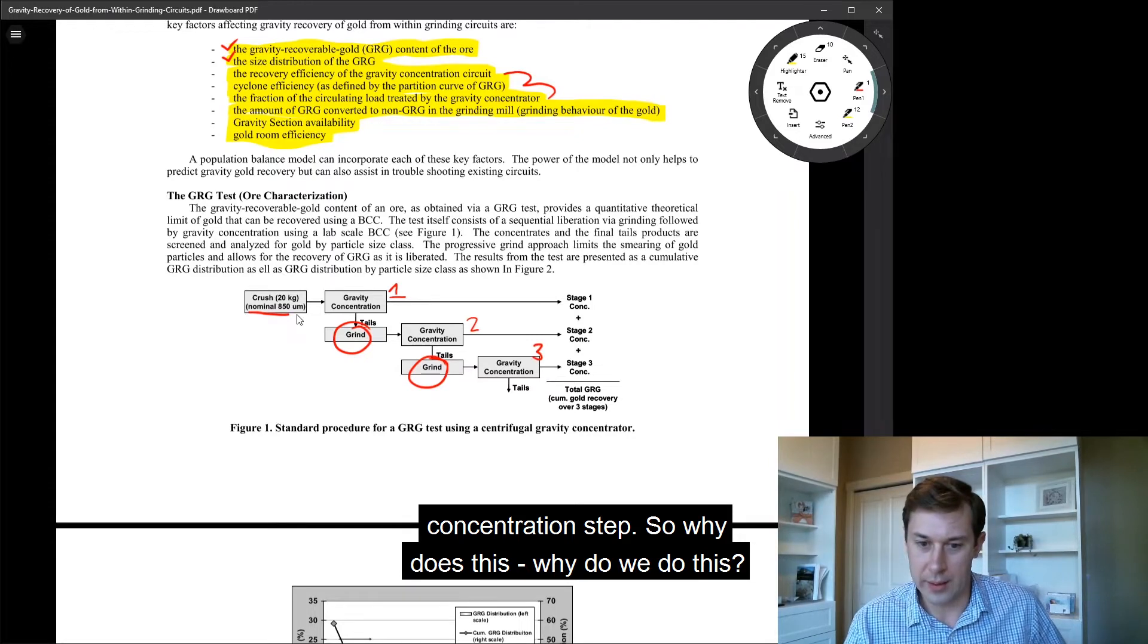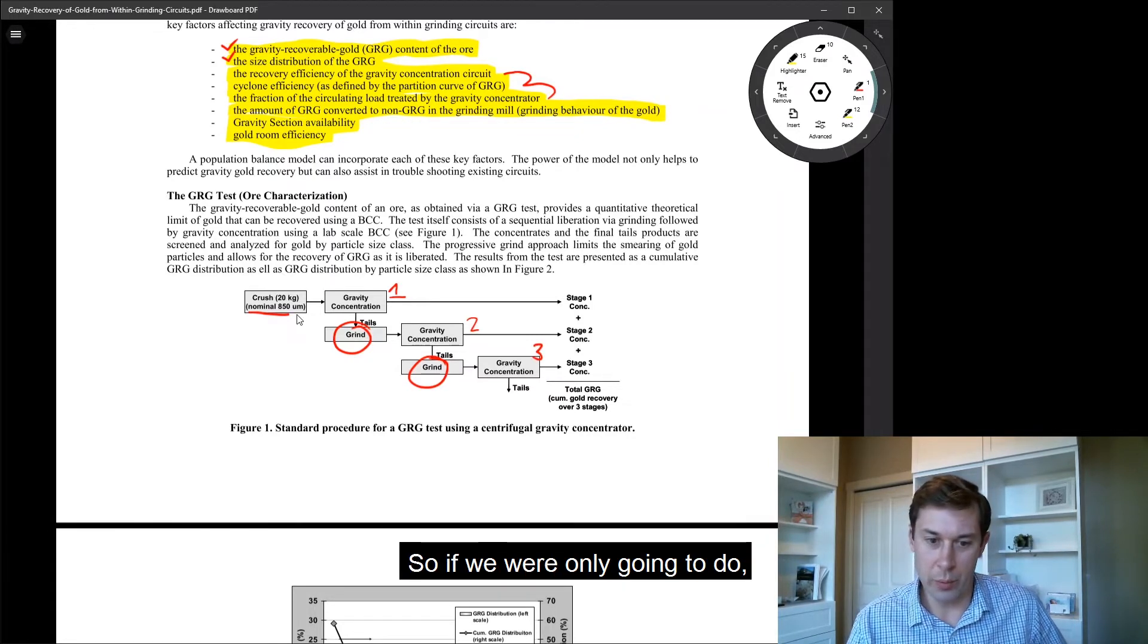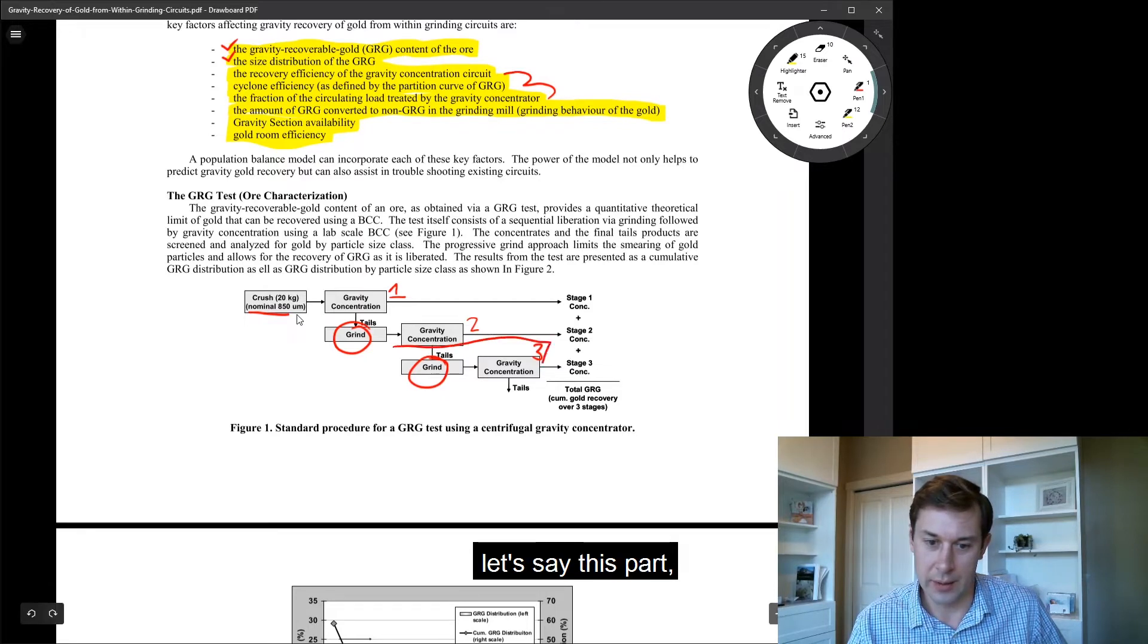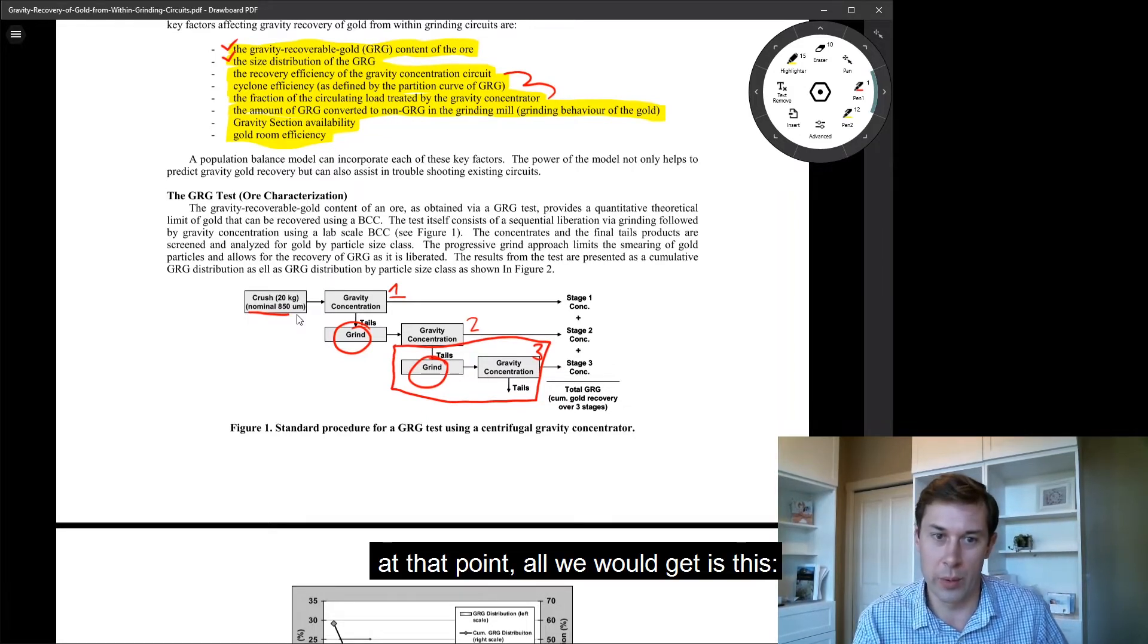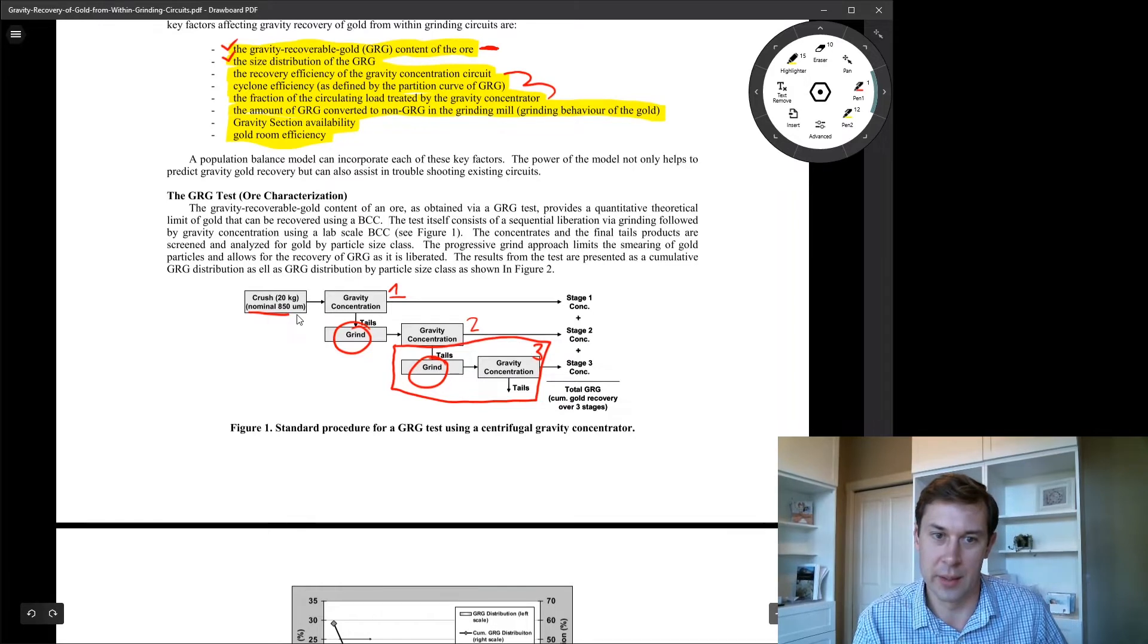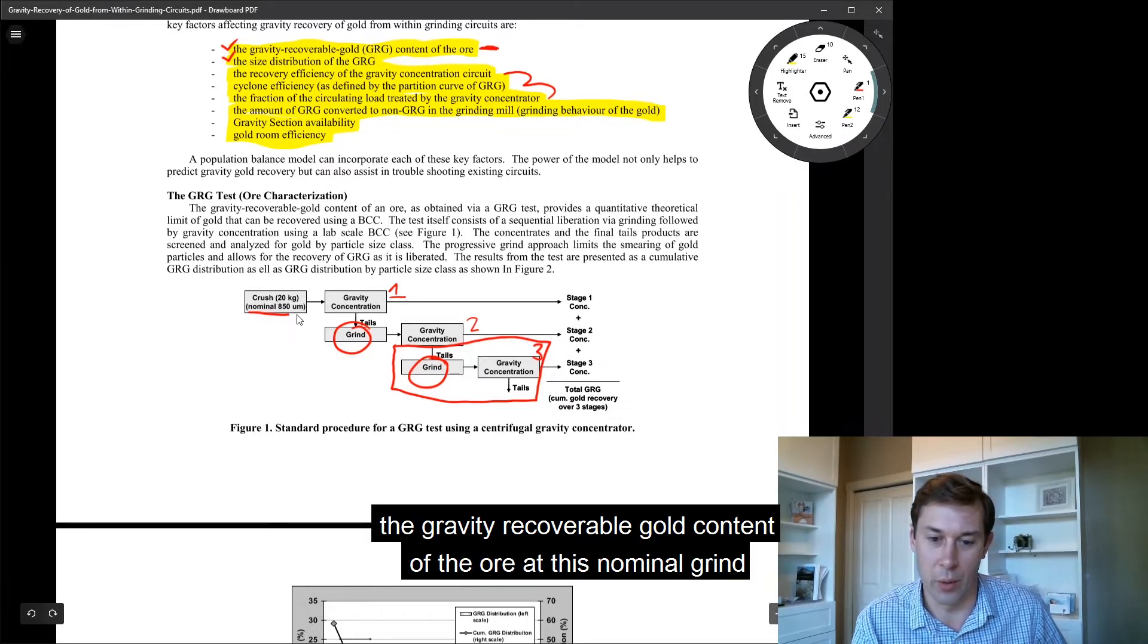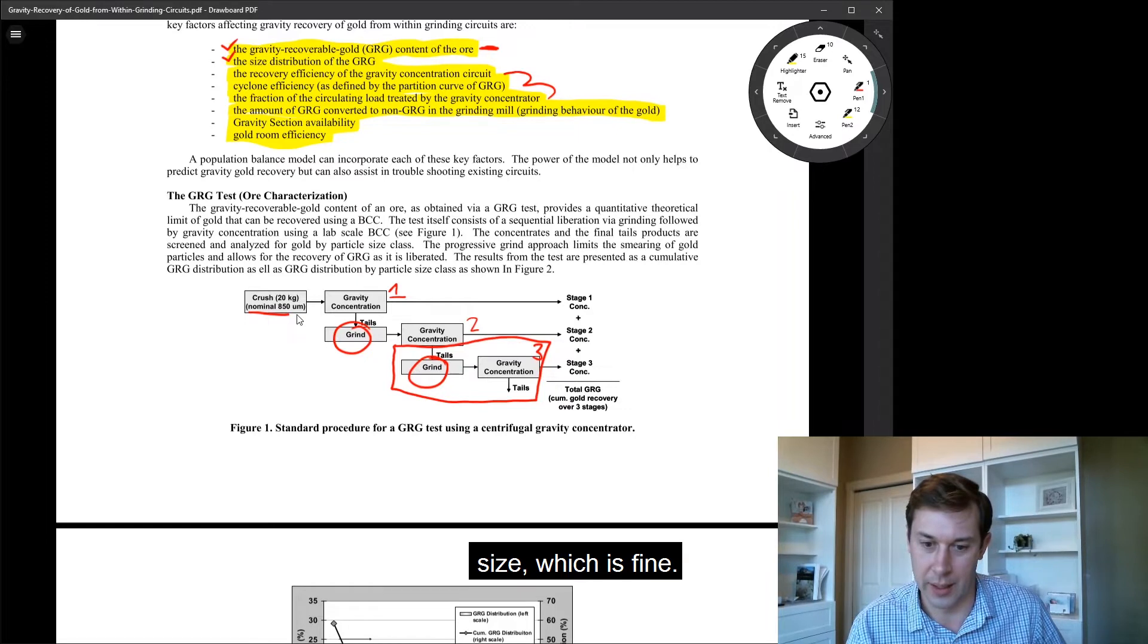So why do we do this? If we were only going to do, let's say this part - the final grind, the final grind size and a gravity concentration step - at that point, all we would get is the gravity recoverable gold content of the ore at this nominal grind size.